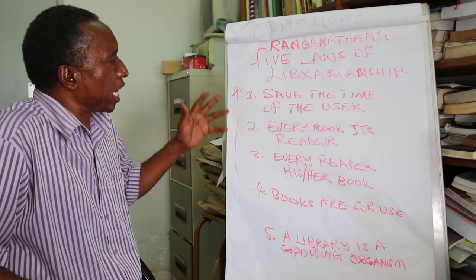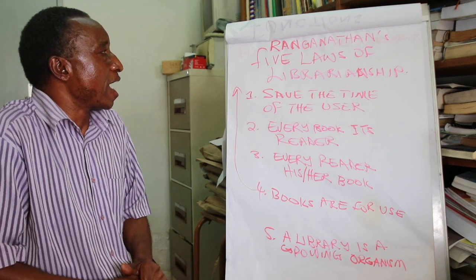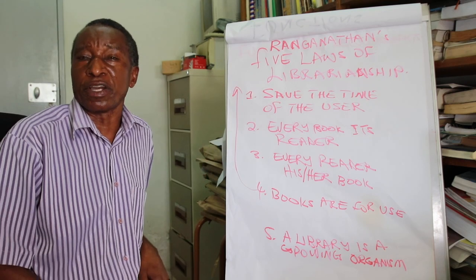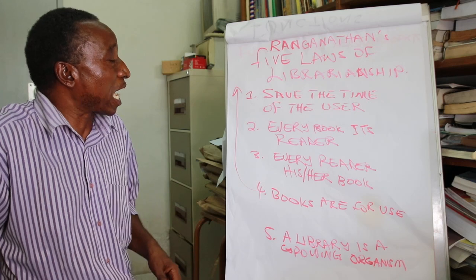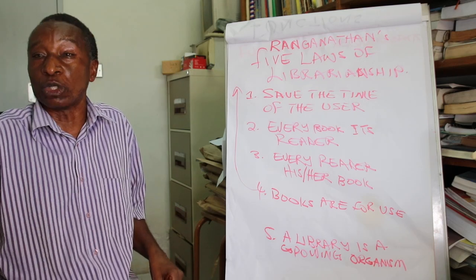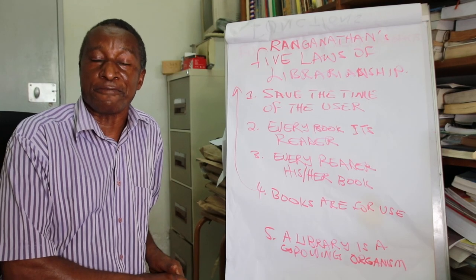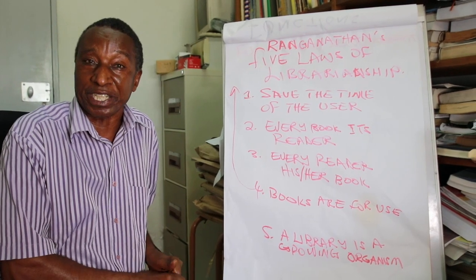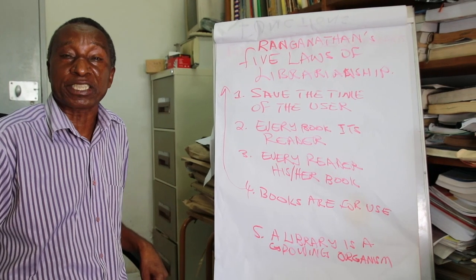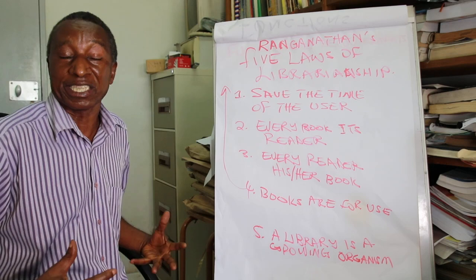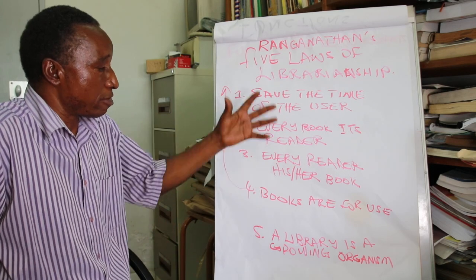We want to take a further step by looking at the functions of a library catalog from the perspective of Ranganathan's five laws of librarianship. Ranganathan is a famous Indian professor who defined the laws of librarianship, and we want to look at them.